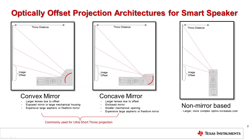Smart speaker projectors are typically projected onto a wall or onto a tabletop. Since the projected image plane is close to the projector and a large image is desired, the optical designs are known as ultra-short-throw designs.